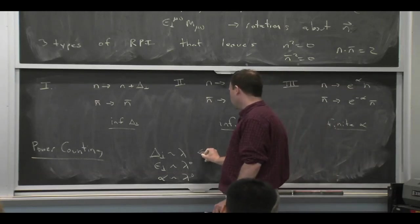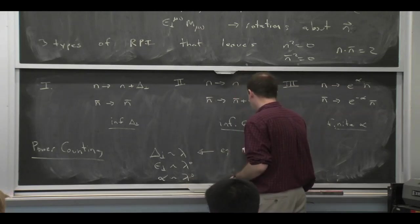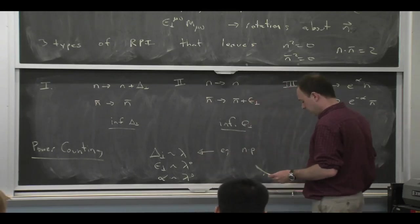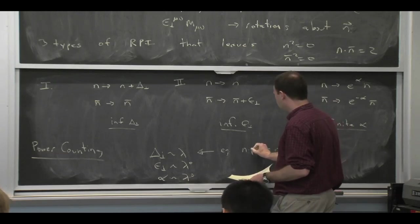And the reason that you can think of there being a constraint, I can give you a simple example, and then you'll see how you would derive the other things as well. So think of n dot p. If you transform n dot p, that becomes n dot, think of this as n mu p mu.